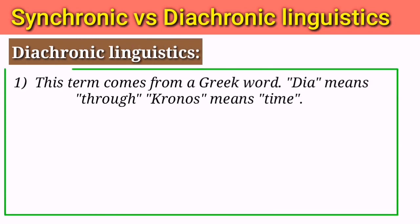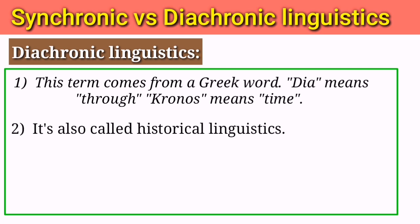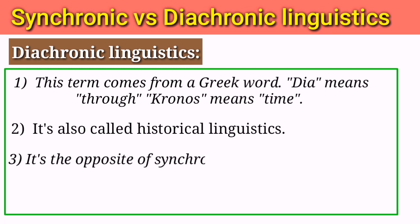So what is diachronic linguistics? Basically, this term also comes from a Greek word — 'dia' means through and 'chronos' means time. Diachronic linguistics is also called historical linguistics — you need to remember that. It is self-explanatory: if we call it historical linguistics, it means it has to do with history. It is the opposite of synchronic linguistics.